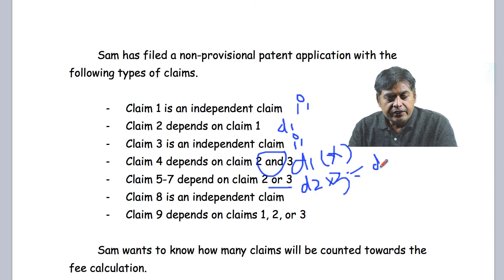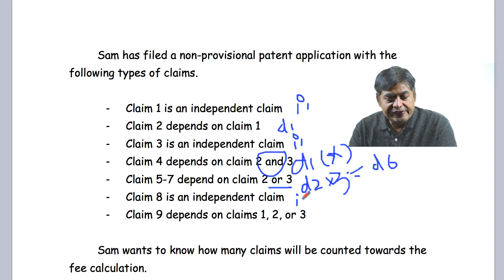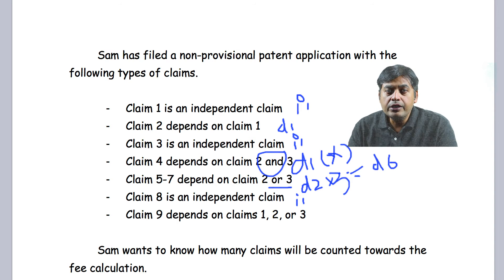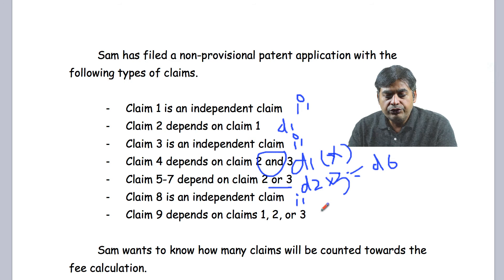Number 8, we have another independent claim — that's 1. Then number 9 depends on Claims 1, 2, and 3. Is it valid? It's a multiple dependent claim. Does it depend on another multiple dependent claim? No, it doesn't. So it's a valid dependent claim — we count it as dependent on 3.